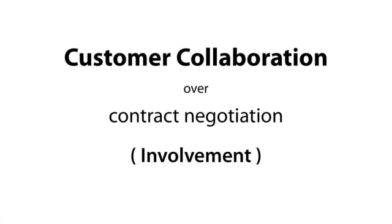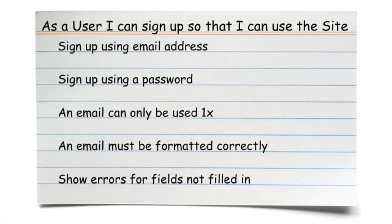Our third value is involvement, which is written as customer collaboration over contract negotiation. There are two big points to cover here: story carding and feedback loops. Story carding is that initial requirements gathering process — it's when we sit down with a customer and figure out what they want and write all of those user stories. A lot of times teams will literally write these on index cards. We'll come up with a stack of these during that story carding process, which can take from a few hours to a few days, depending on the scope of the project.